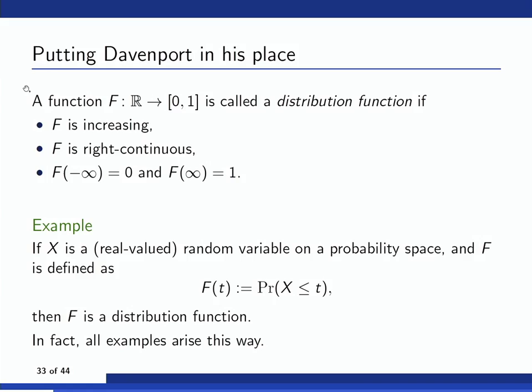I'll define a distribution function as a function F from the reals to [0,1] that is non-decreasing, right-continuous, tends to zero as u → −∞, and tends to one as u → +∞. Distribution functions arise naturally in probability: if you take any real-valued random variable, you get a distribution function by asking for the probability that it falls below t. Conversely, every distribution function arises this way. An arithmetic function f is associated to distribution function F if F(t) is the density of n with f(n) ≤ t, for every t at which F is continuous.